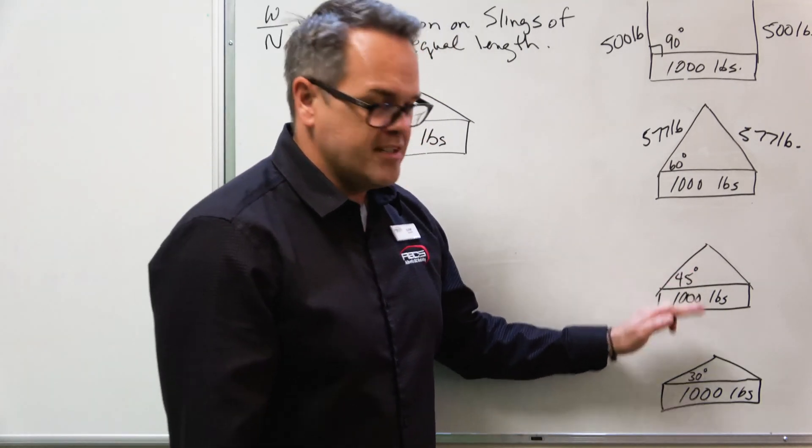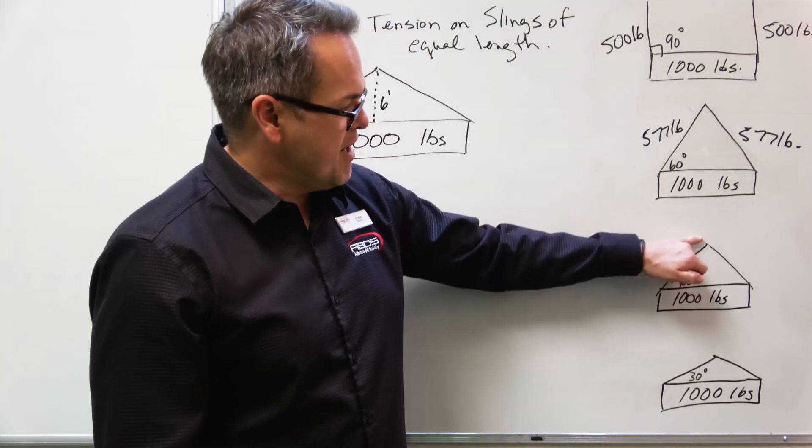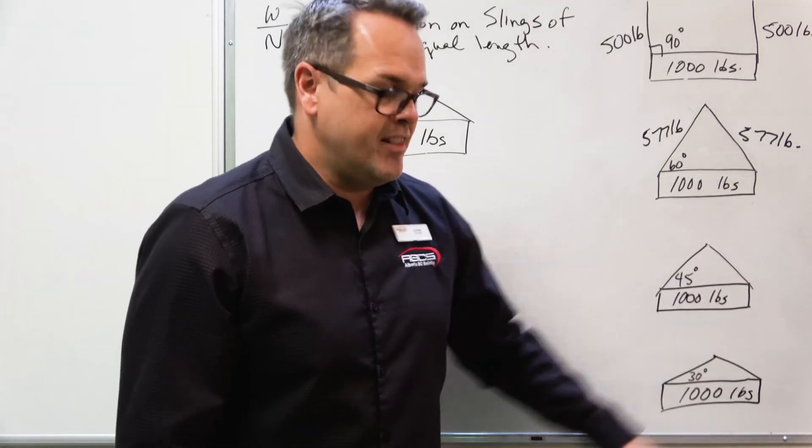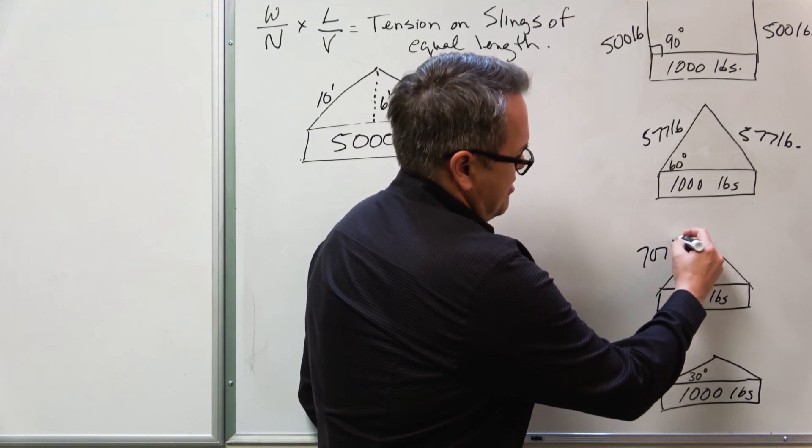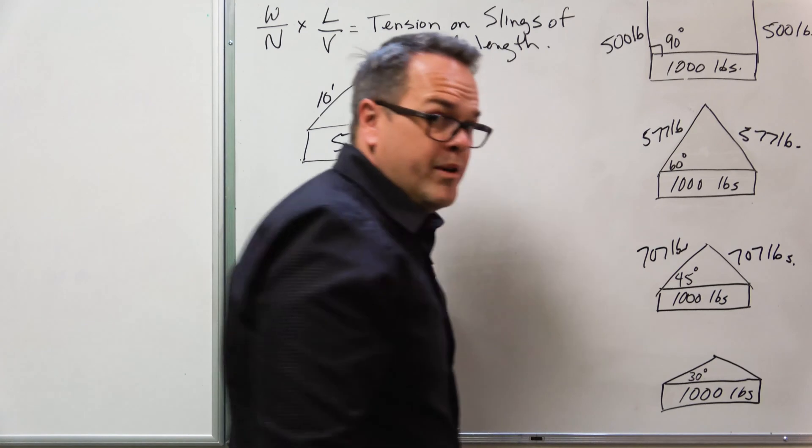Now, let's take it down to 45 degrees. It starts to go up. Still lifting a thousand pound load. If we were to measure how much force is on each one of these slings at 45 degrees, now it's 707 pounds. Quite a bit more.